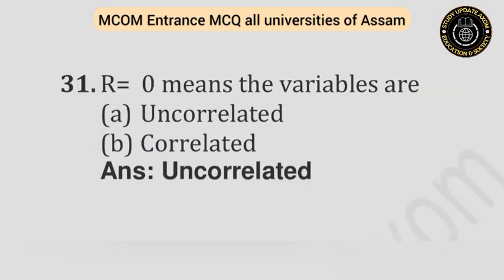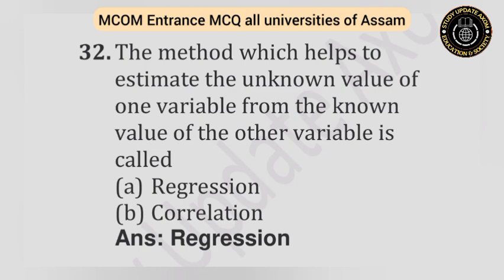Question number thirty-one: r equals zero means the variables are — Option A: Uncorrelated. Option B: Correlated. Answer is uncorrelated. Question number thirty-two: The method which helps to estimate the unknown value of one variable from the known values of the other variable is called — Option A: Regression. Option B: Correlation. Answer is regression.